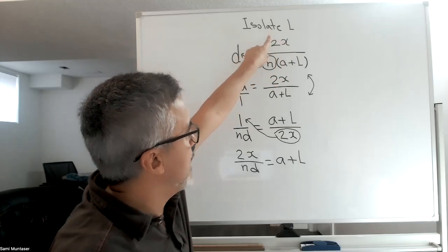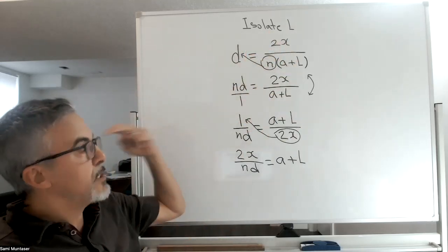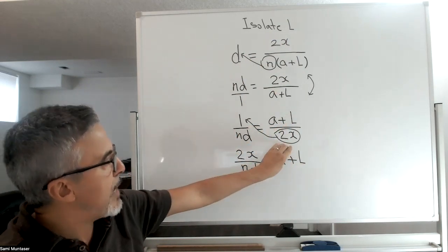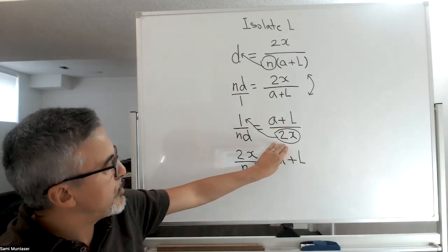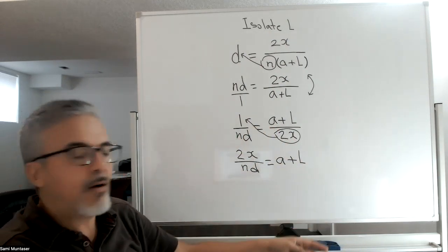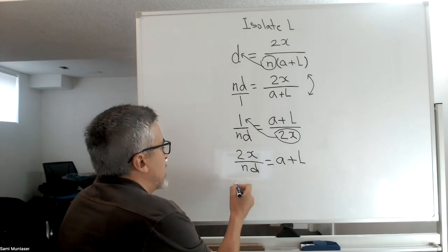Remember we're trying to isolate the L, so always when you're doing this you have to keep in mind that we're isolating the L. We want to have the L by itself. That's why I removed this 2x and moved it there, because now I have only a plus L.